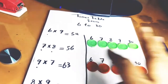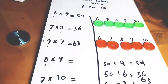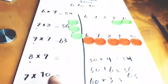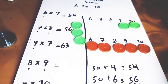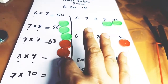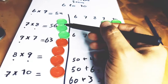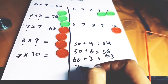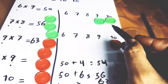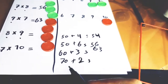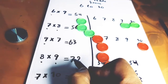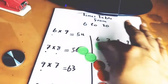Let's try 8×9. We select 8 from the top row and remove it and the rings before it. We select 9 from the bottom row and remove it and the rings before it. Each ring removed equals 10: 10, 20, 30, 40, 50, 60, 70 — that's 70. Remaining rings: top has 2, bottom has 1: 2×1=2. So 70+2=72. Therefore 8×9=72.